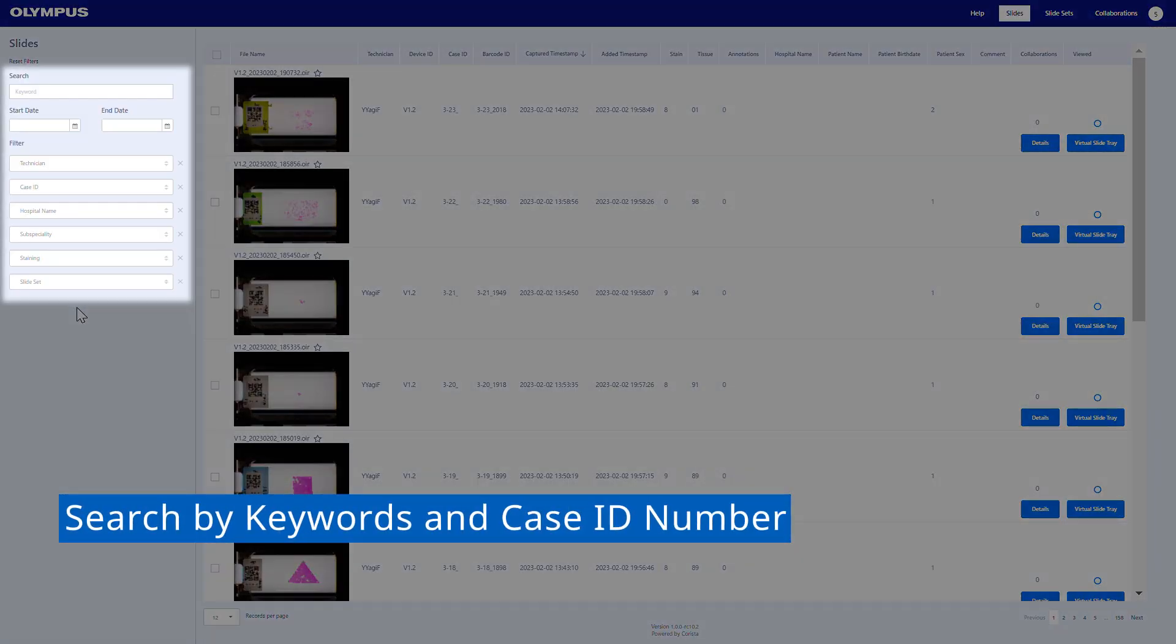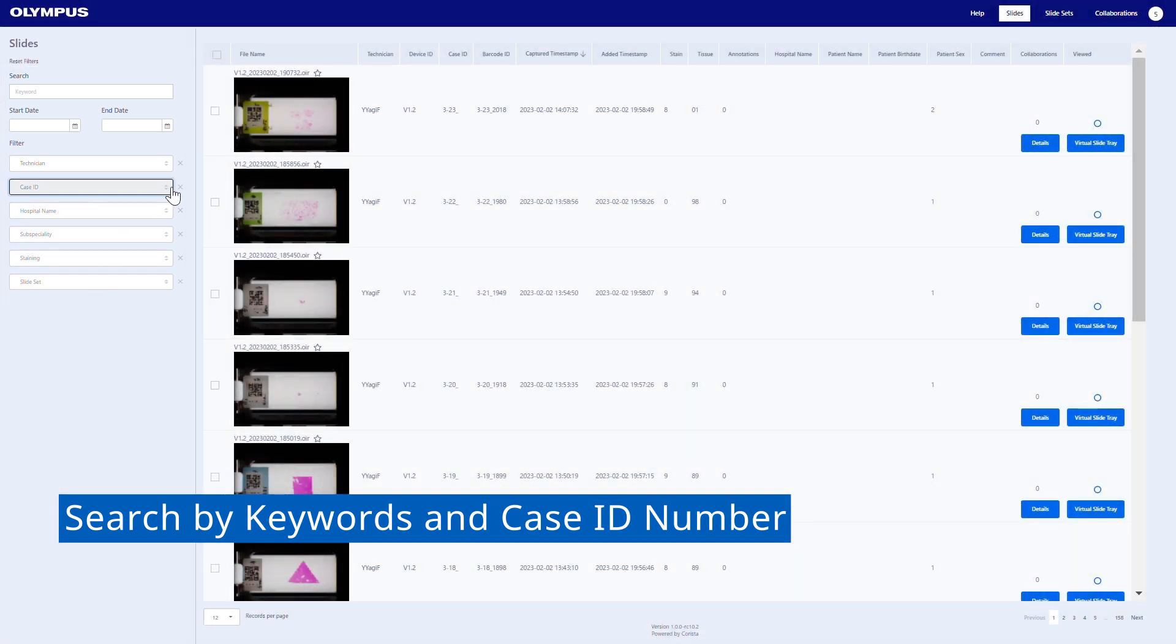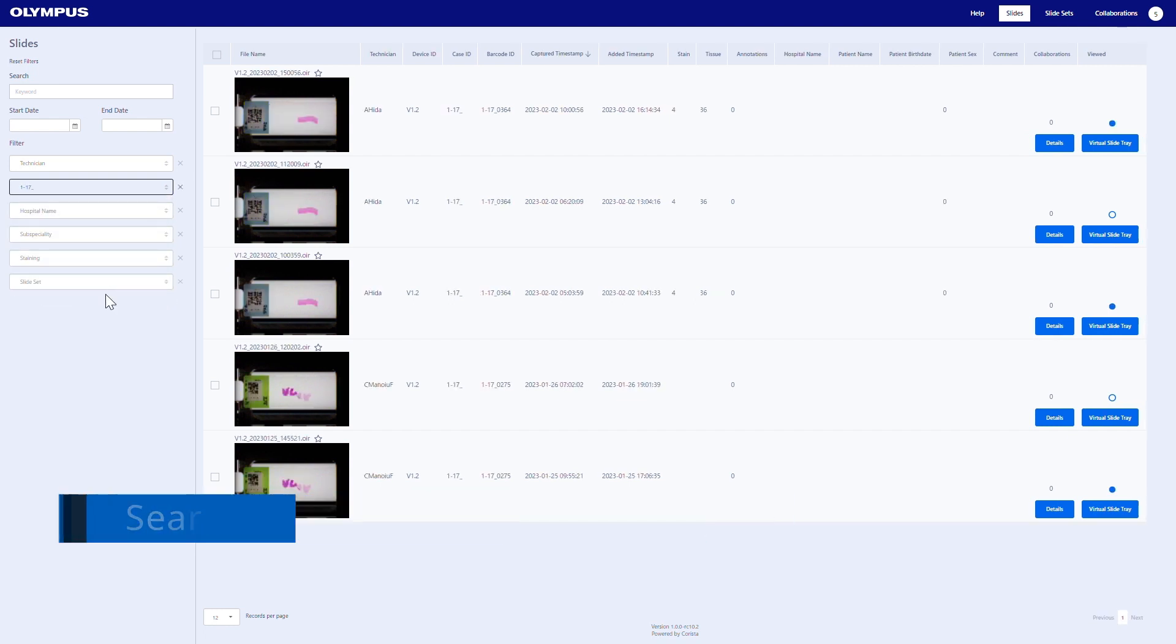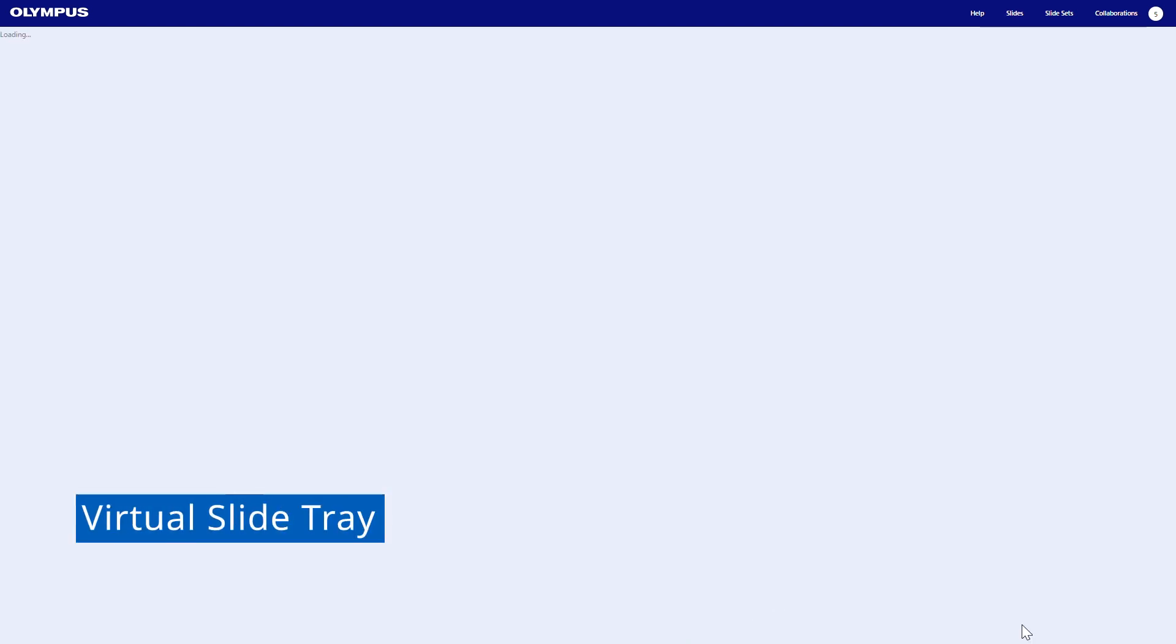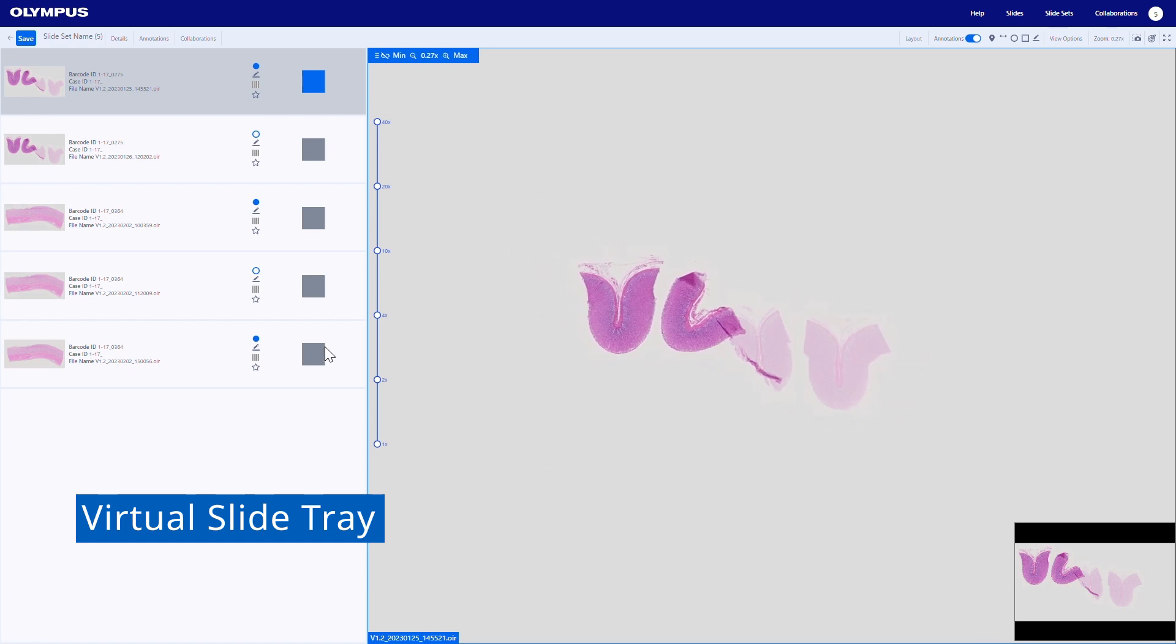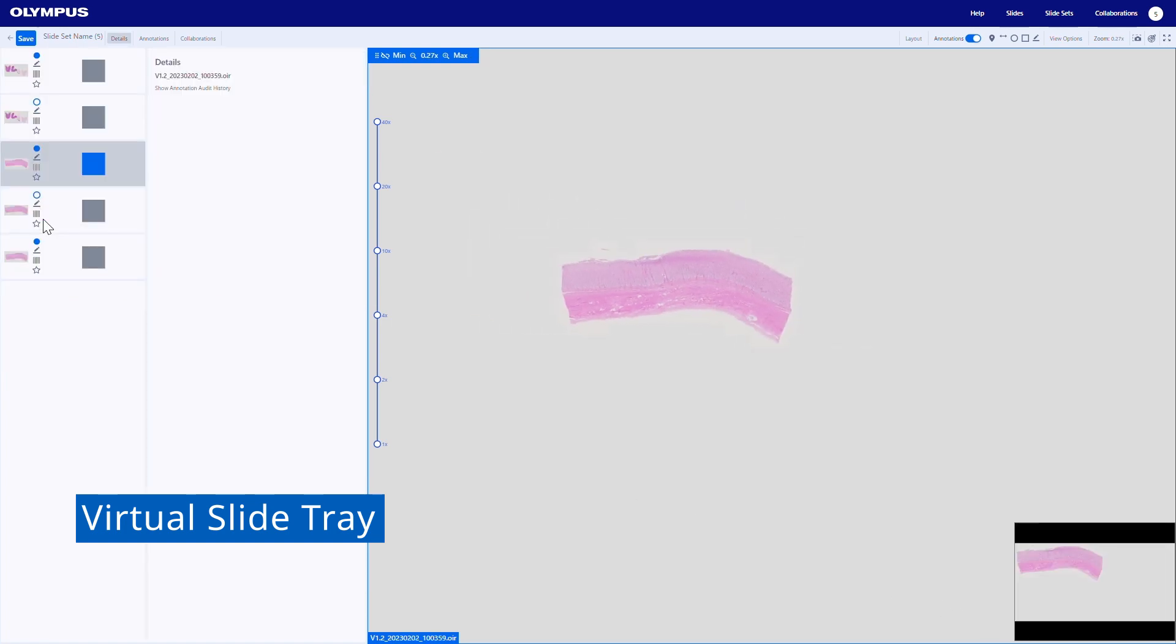Pathologists can easily find target slide images with keywords as well as case ID numbers. The searched images are aligned on a virtual slide tray that mirrors handling a physical slide on the slide holder for simple familiar slide management.